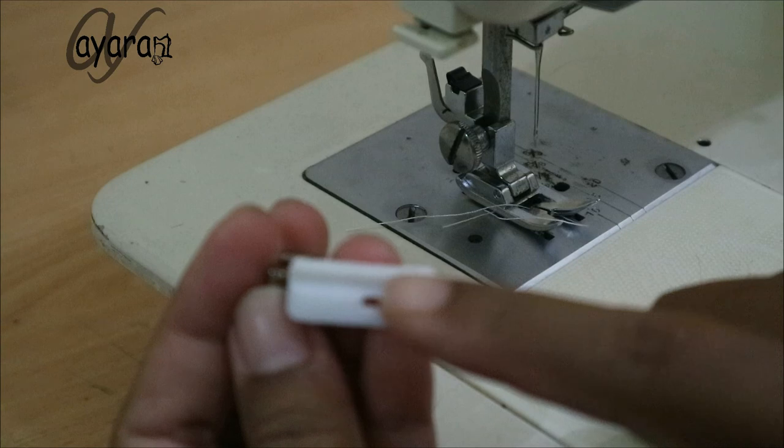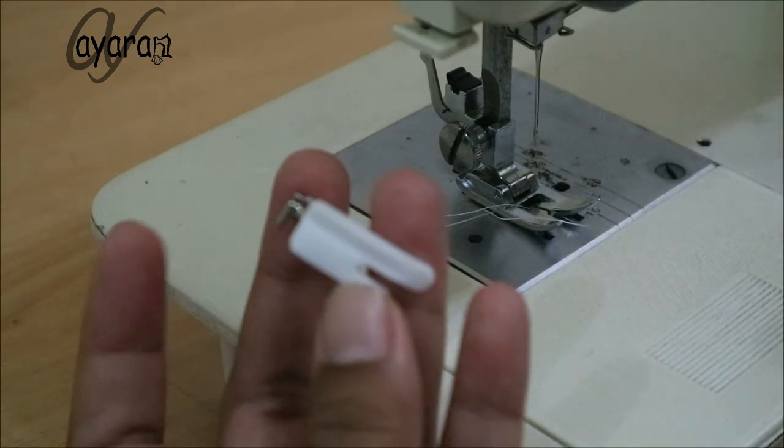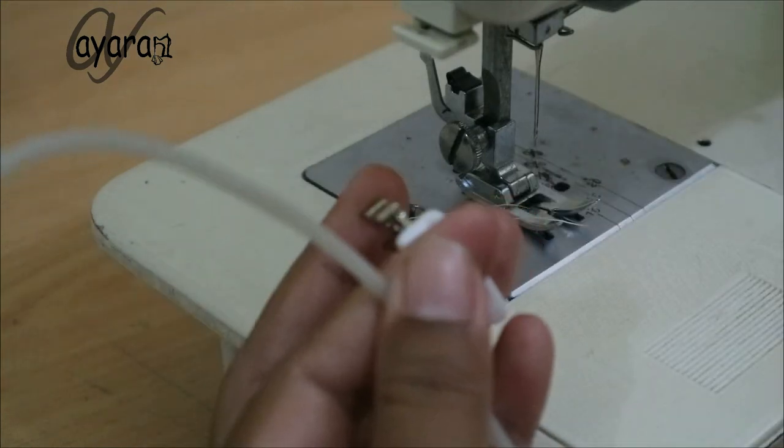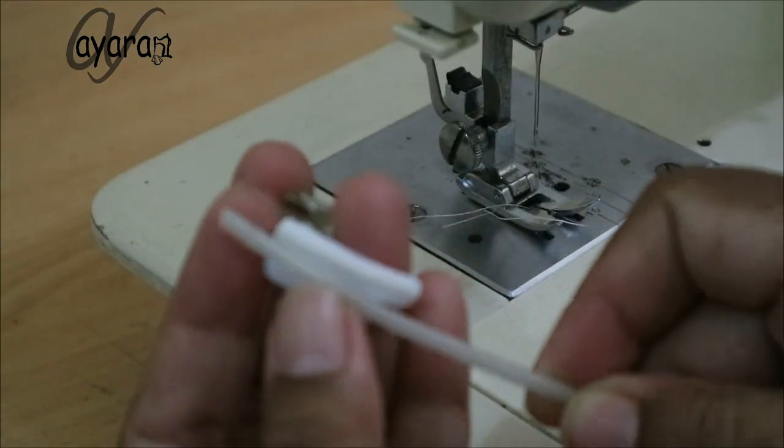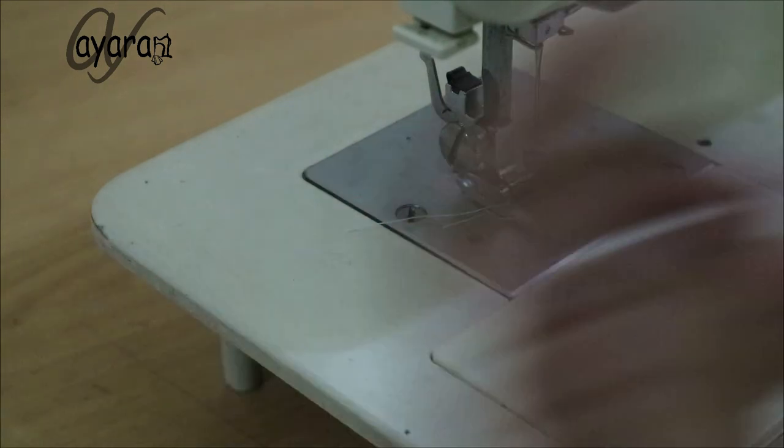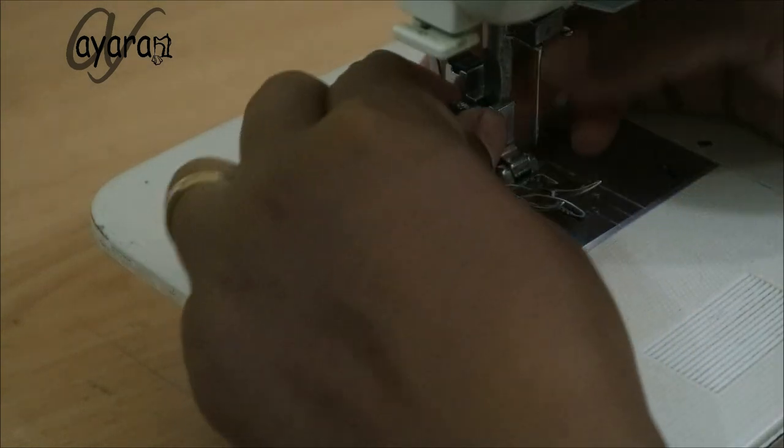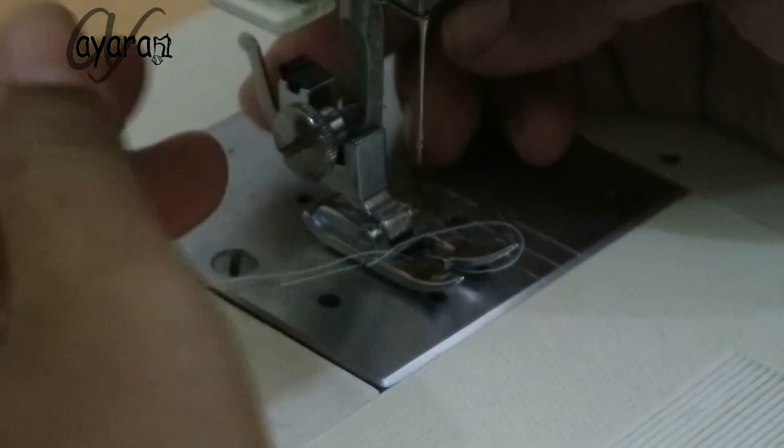The way we sew is that the piping must fit exactly in the groove. What we need to do first is remove this presser foot that came with the machine.